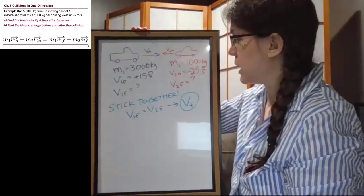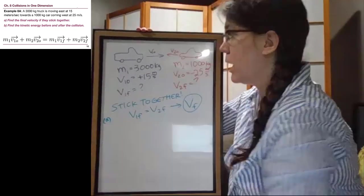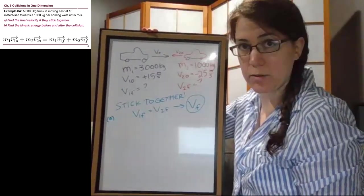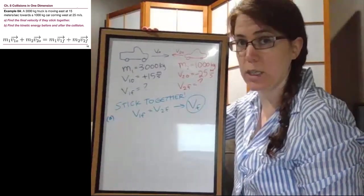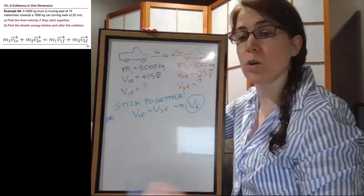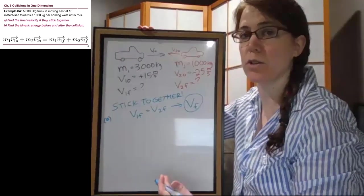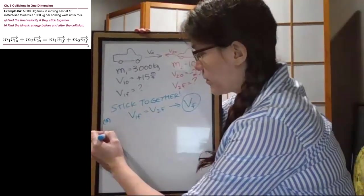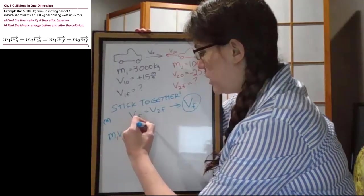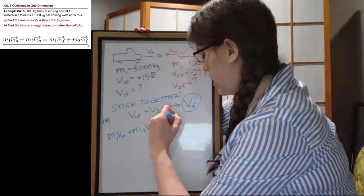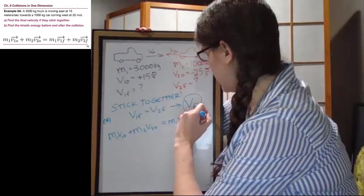Okay, so in this first part, any time that we have a collision, we have to use the momentum conservation equation to solve that collision. There is no other tool to use. So any time there's a collision, we have to use the equation M1 V1 initial plus M2 V2 initial equals M1 V1 final plus M2 V2 final.